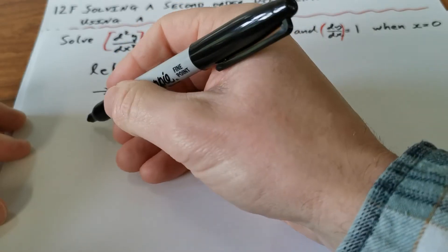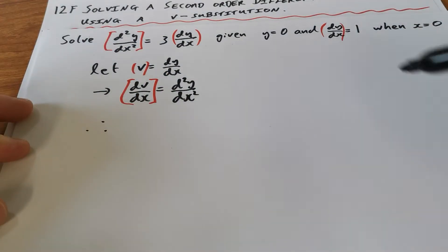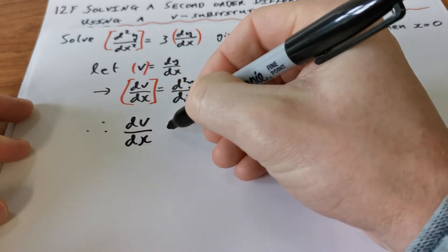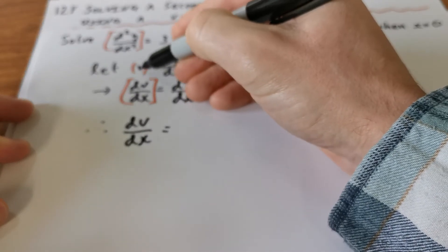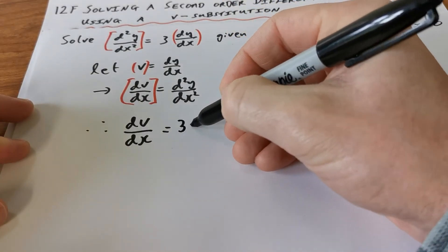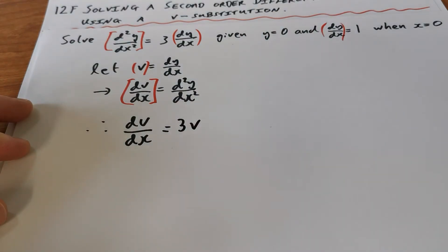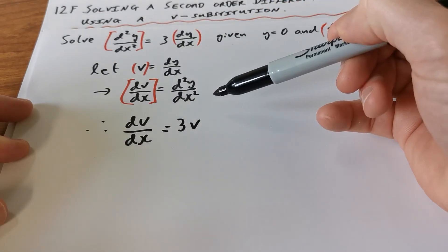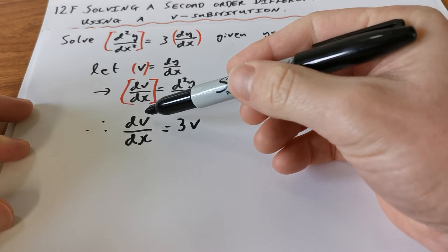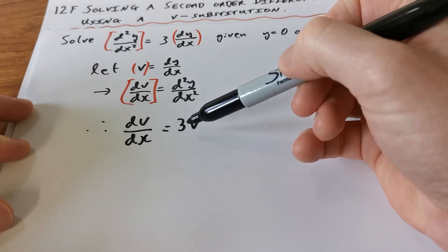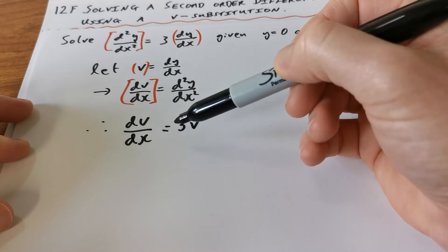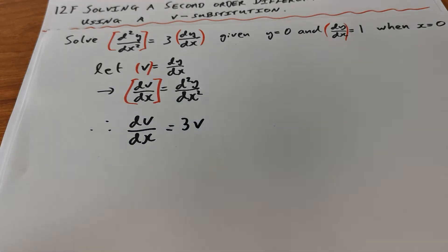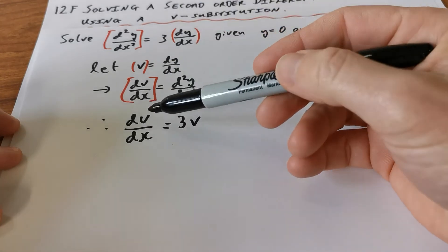Applying the substitution: d²y/dx² becomes dV/dx, and dy/dx becomes V, so the equation becomes dV/dx = 3V. The magic of this is that we've changed a second-order differential equation into a first-order differential equation. We can now separate and integrate, and find particular solutions using the constant of integration.